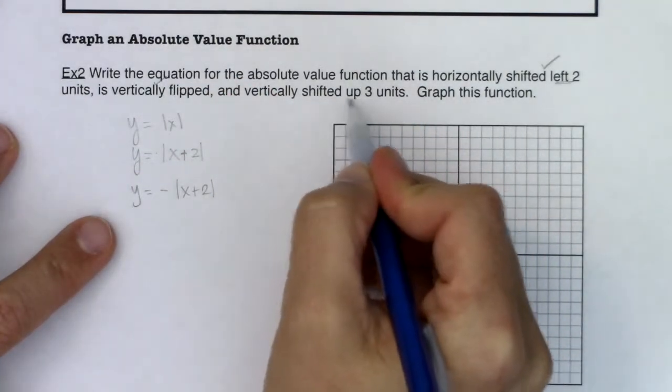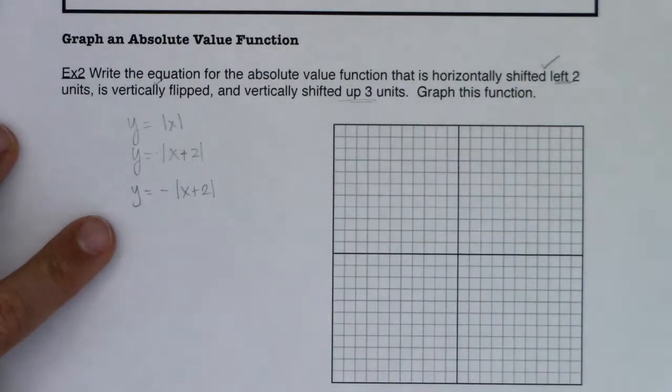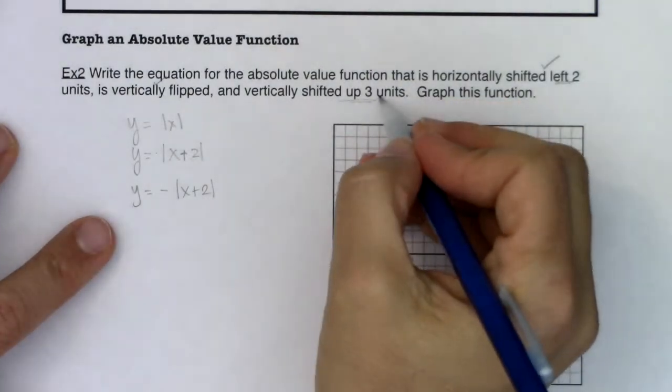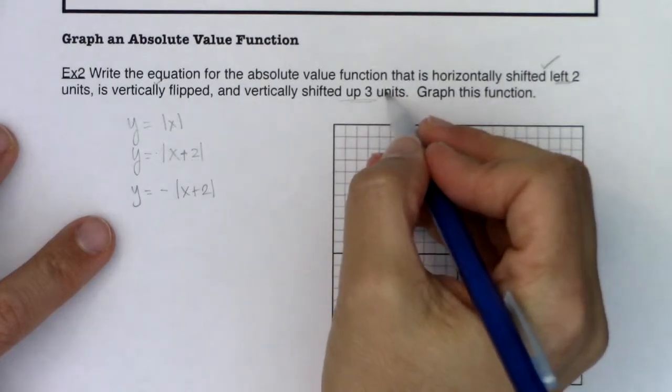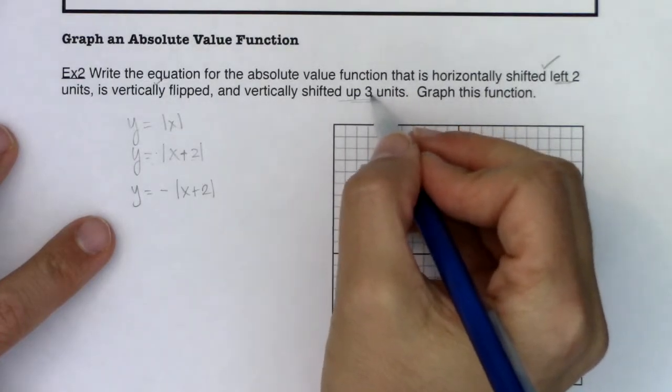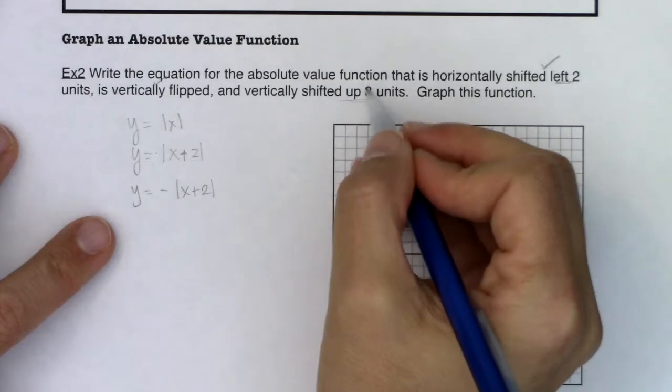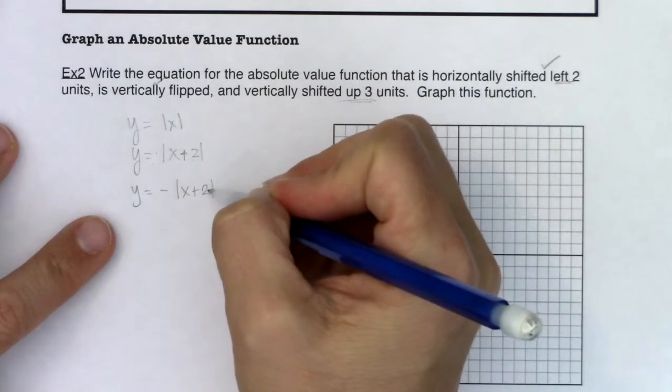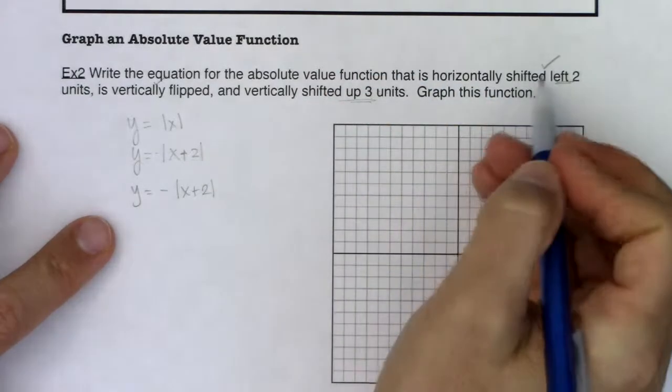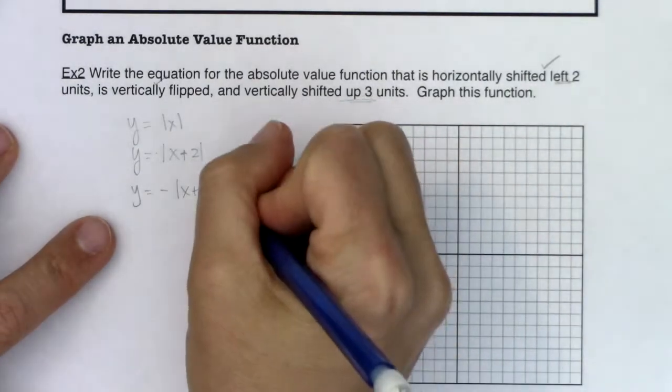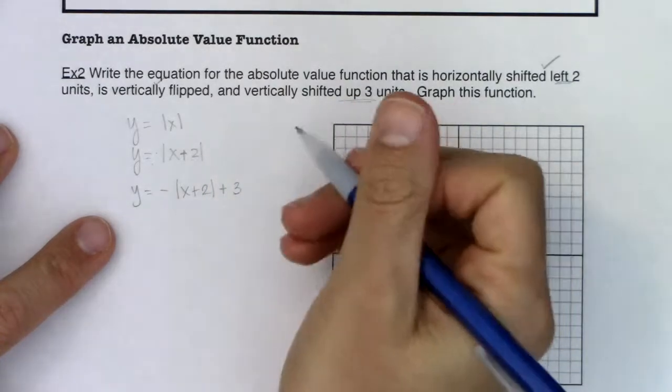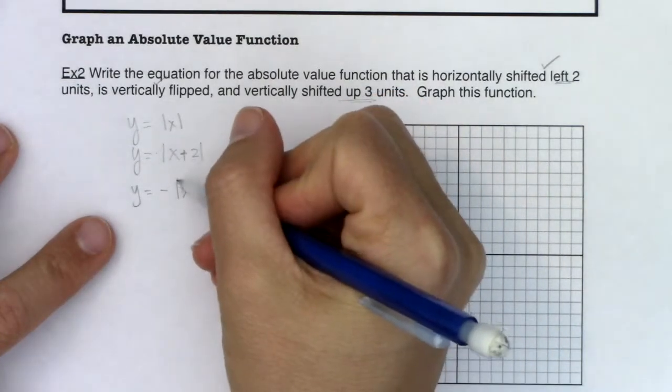All right, so I'm getting there. And then the last thing I need to do is shift up three units. Well, if I'm going to shift up three units, again, I'm either going to add or subtract a number. And this time, I'm going to add three, because I'm moving up. And you'll either add inside or outside. But we already talked about when you shift left, right, that's when you add inside. So when you're shifting up, down, you're going to add outside of your grouping symbol or outside of your function.